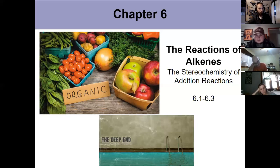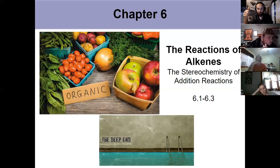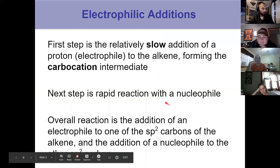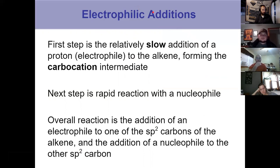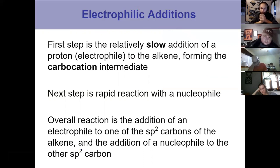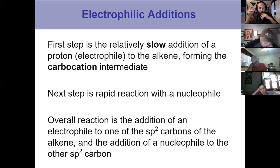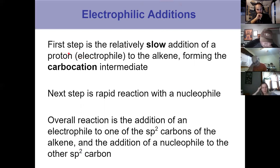The general theme is that alkenes undergo electrophilic addition reactions — a term introduced in chapter five. The alkene acts as the nucleophile in the first step because of the pi bond, and thus the first species it reacts with is an electrophile. Thinking about reaction coordinate diagrams, the first step where we add the electrophile is the slow, rate-determining step. Taking an alkene and adding HBr, for example, the first step was the relatively slow addition of a proton acting as an electrophile.